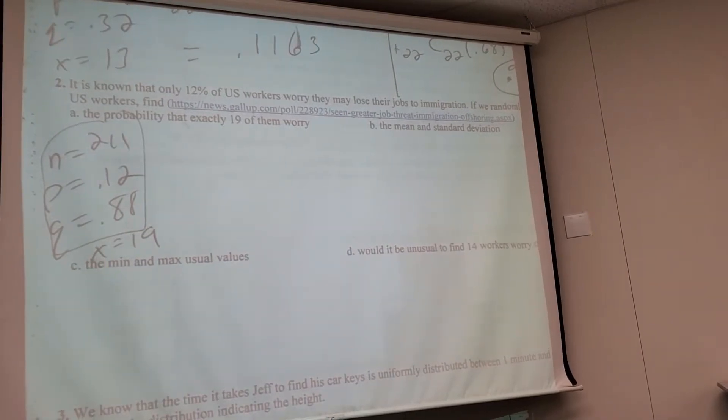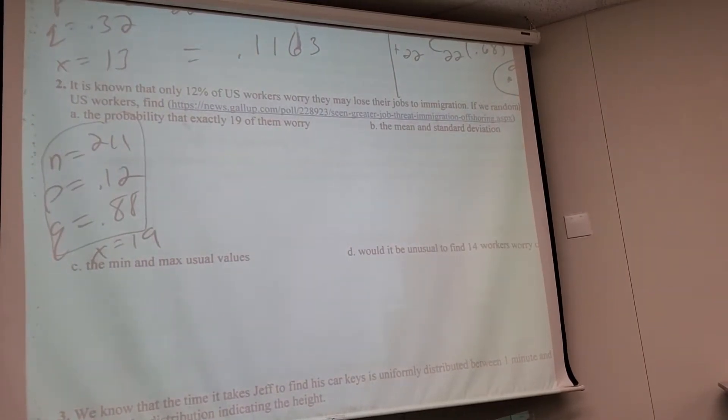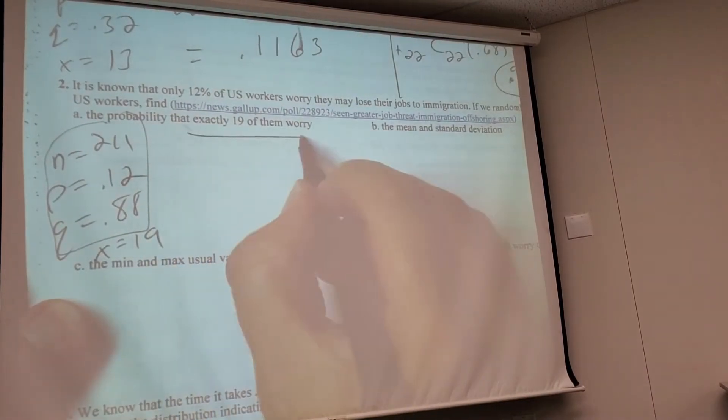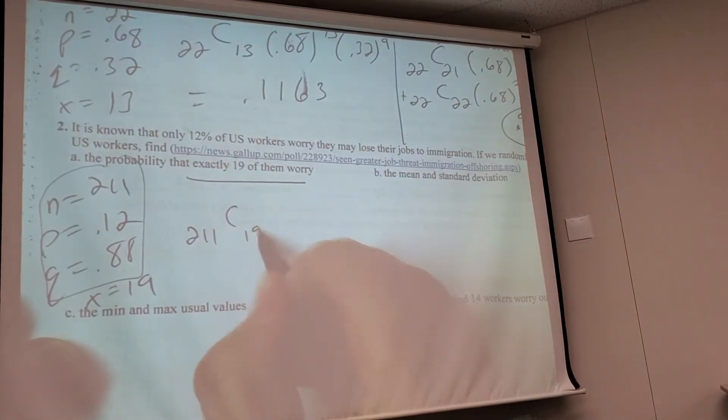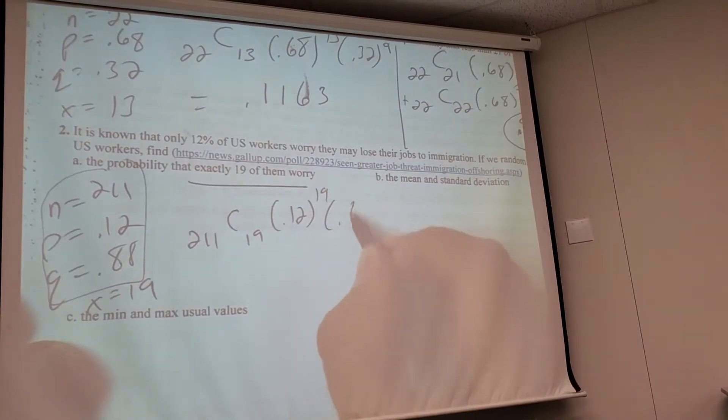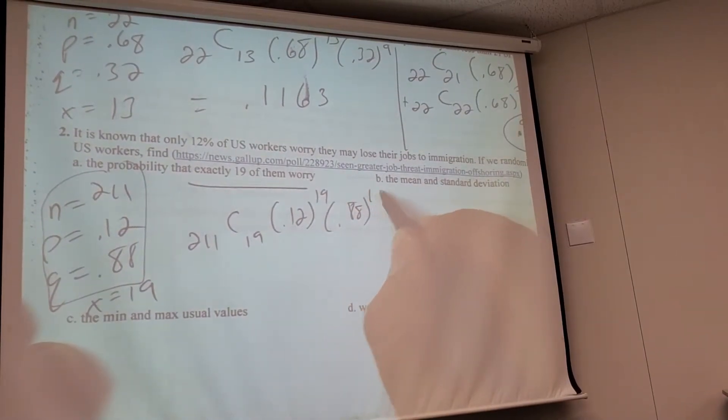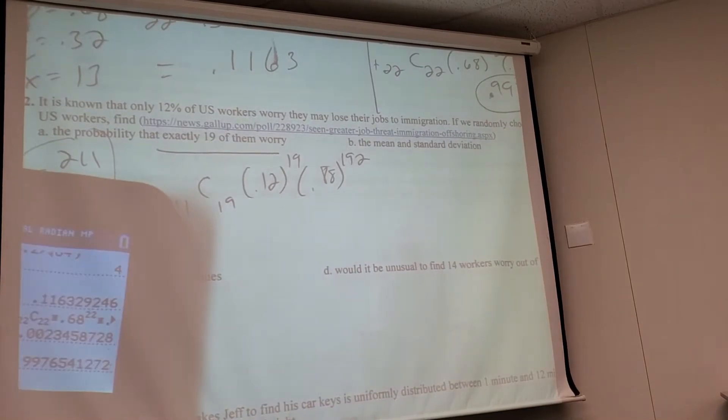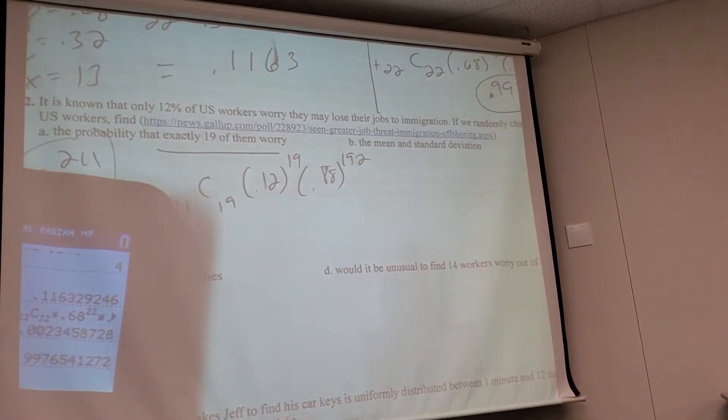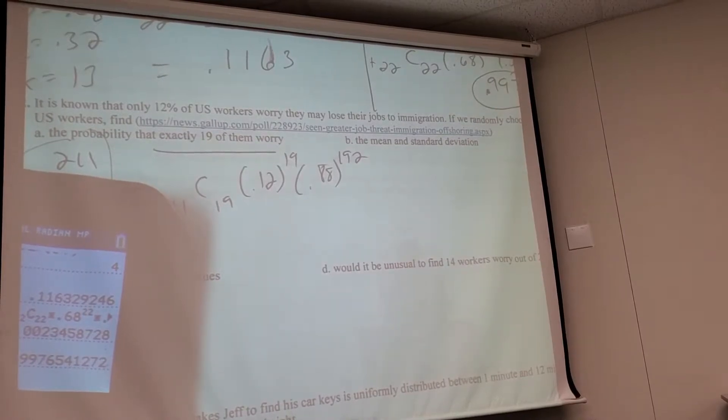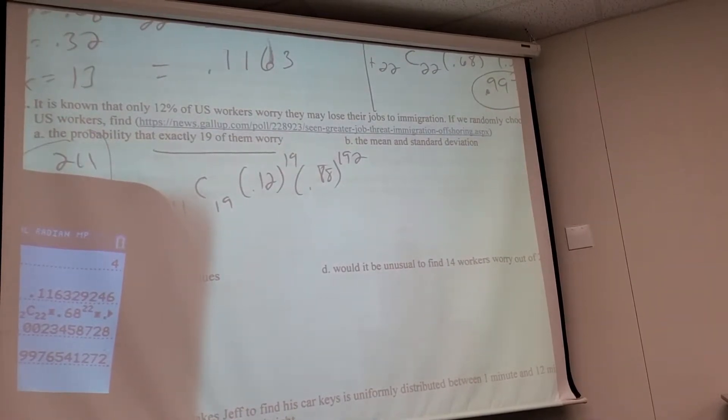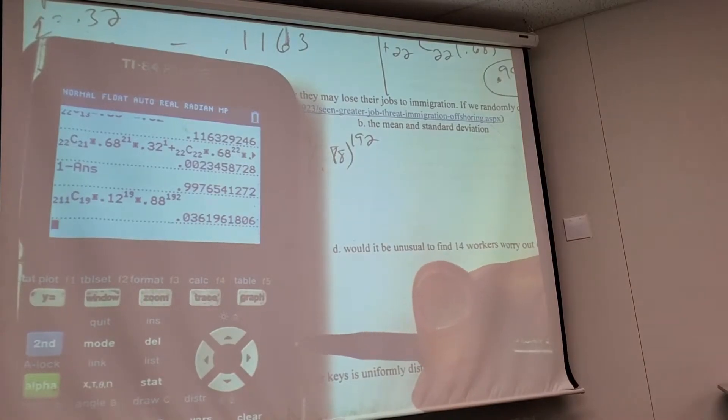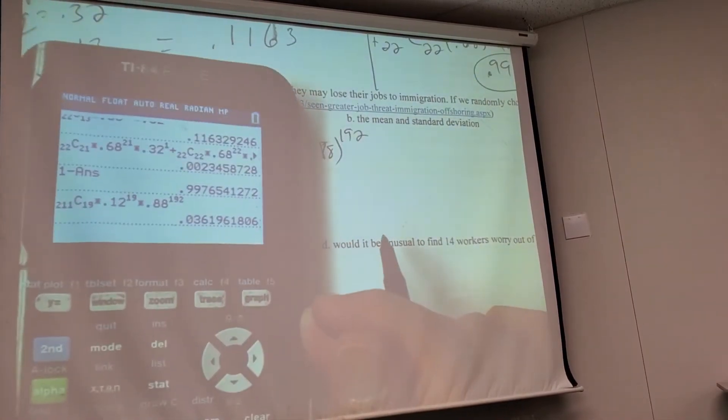So this one's not that bad, right? It's just like that first one. So it should be 211 choose 19. So I want 19 successes, and I want how many failures? 192. The rest of them, right? These both make 211 together. What do you guys get when you put that in there? 0.362. Let me see what I get. Not that I don't trust you. Did I do that too quickly? No, it's all right. I get 0.362? Yes.